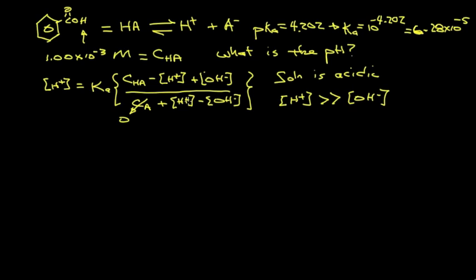So for the first approximation, we can throw these terms out. This simplifies to H-plus equals Ka times CHA minus H-plus, all over H-plus.